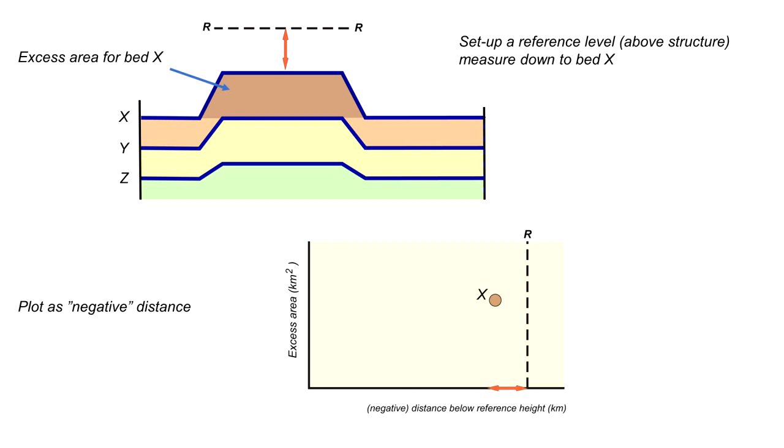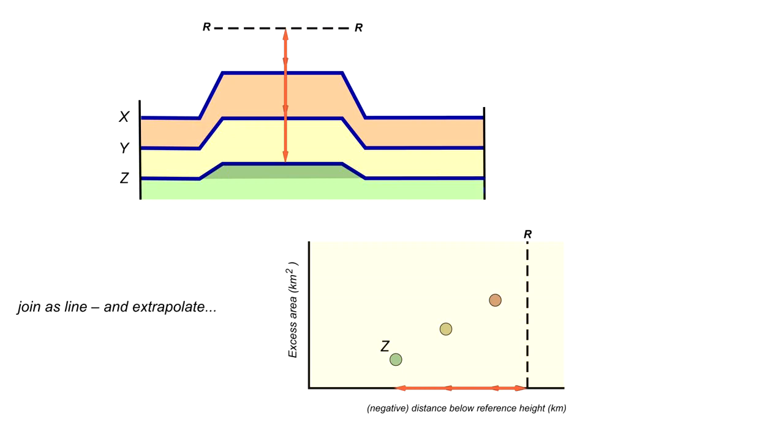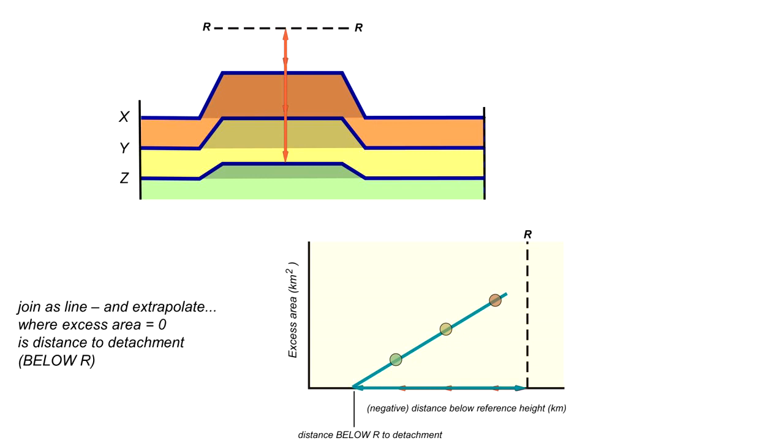Let's get going. This is the distance down to bed X, and there's the excess area for bed X measured in. Do the same for Y. Again, a further distance down below the reference level, a reduced excess area compared to X. And again for Z. Further down below R, the reduced excess area for bed Z. And again, these are plotting on a straight line. Simply join these up and extrapolate to where that line intersects excess area equals zero. That defines along the horizontal axis there the distance below R to the detachment. We can take this back to our cross section, measure down from R, taking that distance, and that is the detachment level.